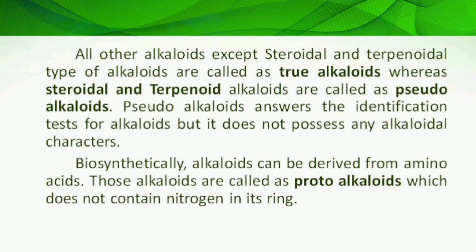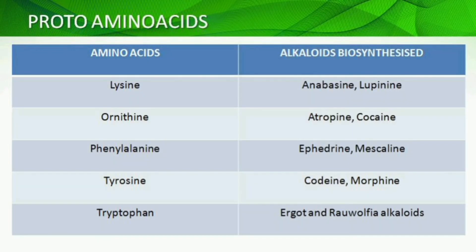Pseudo-alkaloids possess pseudo-alkaloidal properties. Alkaloids can be biosynthetically prepared from amino acids. For example, from lysine you can get anabazine and lupinine. From ornithine amino acid, you can biosynthesize atropine and cocaine. Ephedrine and mescaline come from phenylalanine and tyrosine. Codeine and morphine, as well as ergot alkaloids and Rauwolfia alkaloids, come from tryptophan. These may not have a nitrogen ring but will possess the properties of alkaloids.